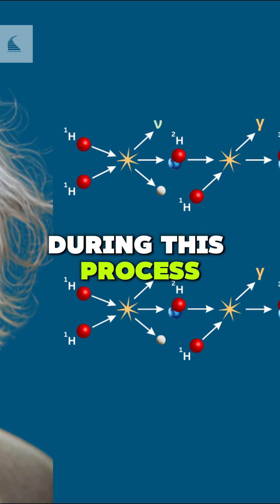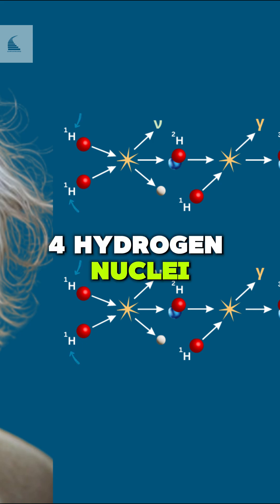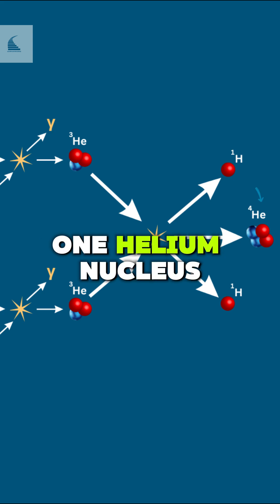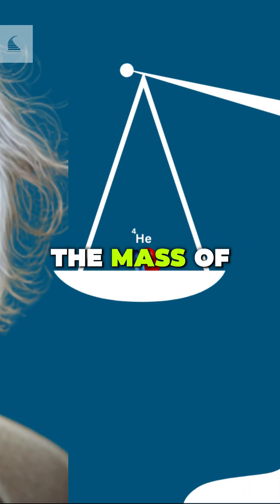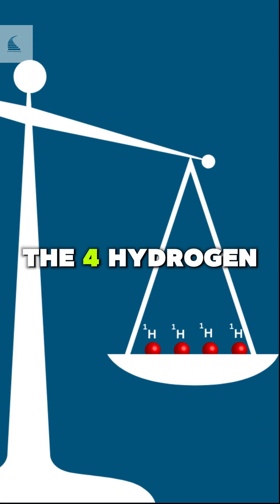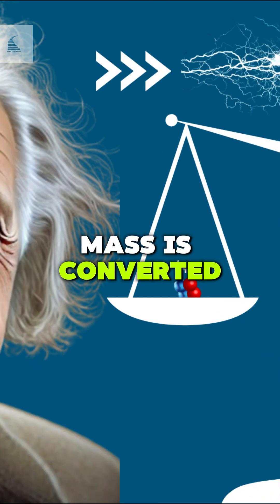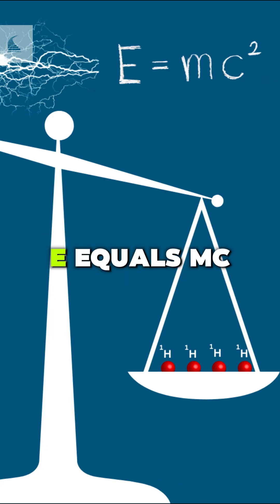During this process, four hydrogen nuclei combine to form one helium nucleus. The mass of the helium nucleus is slightly less than the total mass of the four hydrogen nuclei, and this missing mass is converted into energy using E equals mc squared.